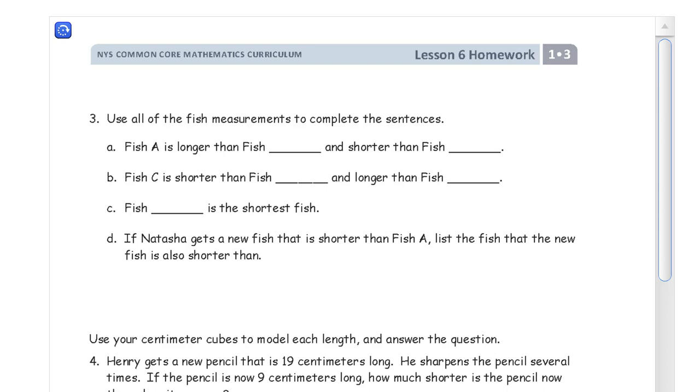Now it says to use all of the fish measurements to complete the sentences. We've got fish A, fish C, so we're going to use all of the fish. If you're using two-sided pages, you're going to have to be going back and forth. So I'm going to use a trick that I used before for lesson 5 homework and I'm going to go back and make some notes on this page so I can just look at them while I read the questions and answer the questions.